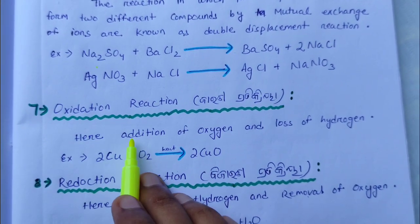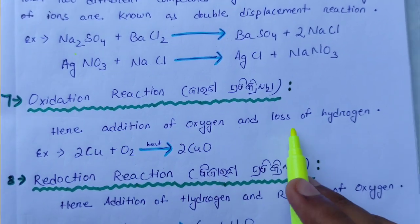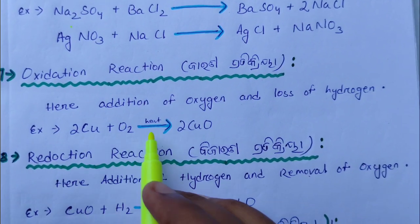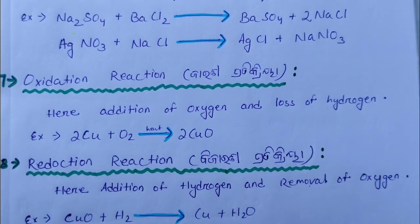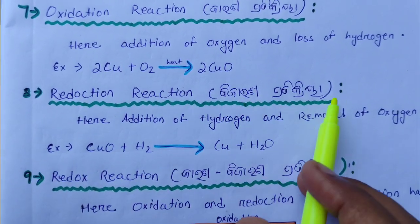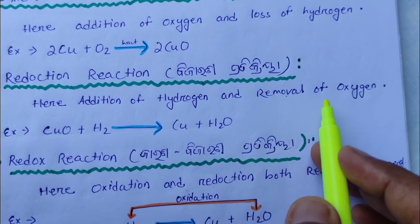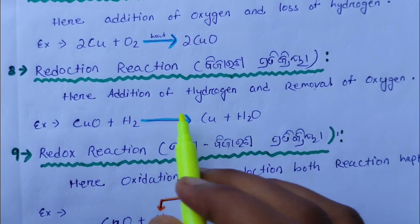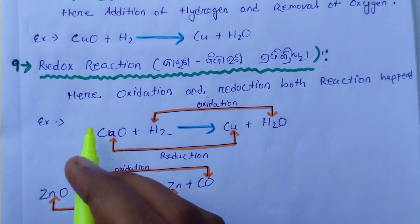Oxidation means the addition of oxygen or the loss of hydrogen. For example: 2Cu + O₂ → 2CuO. When we add oxygen, hydrogen is removed — that is an oxidation reaction. Reduction means the addition of hydrogen and the removal of oxygen. For example: CuO + H₂ → Cu + H₂O.